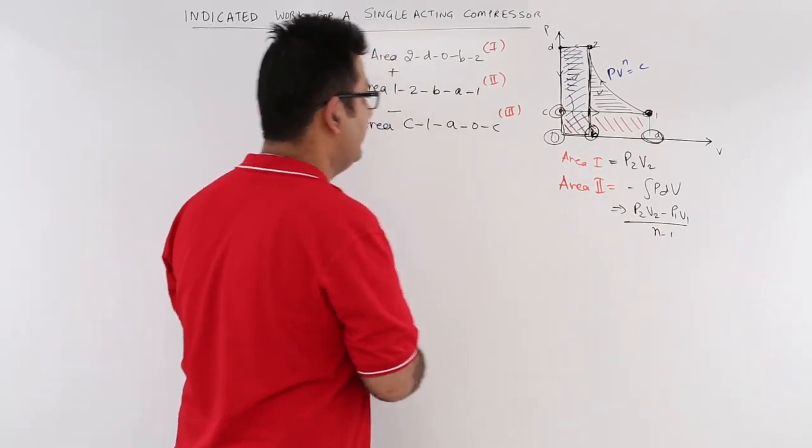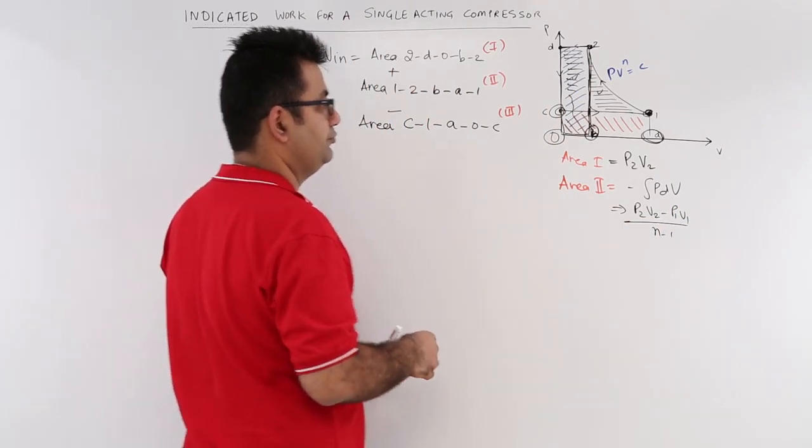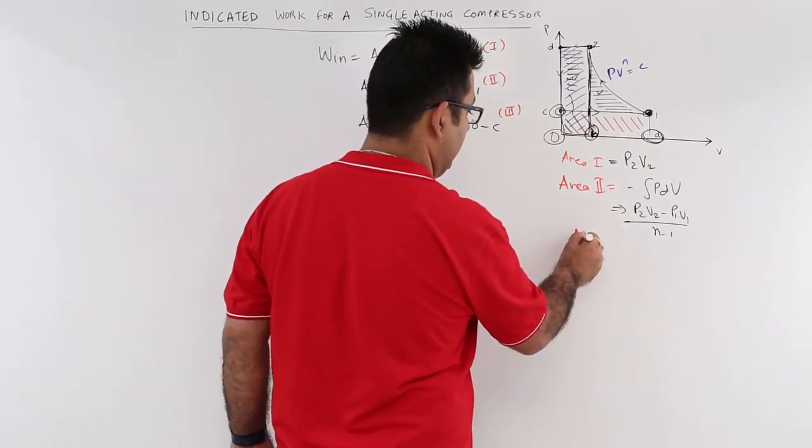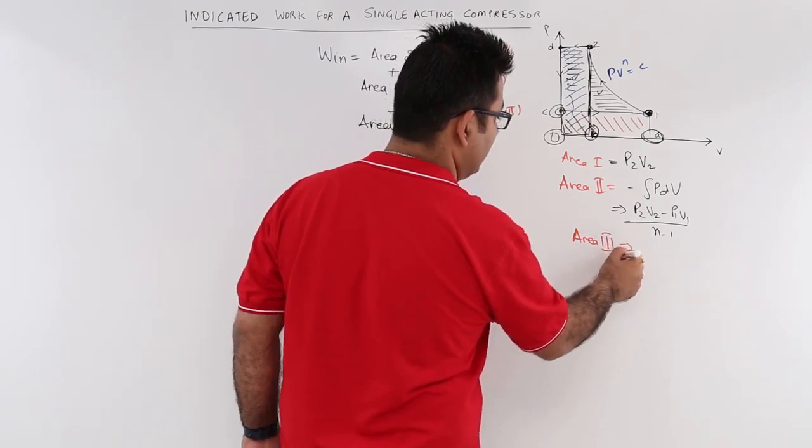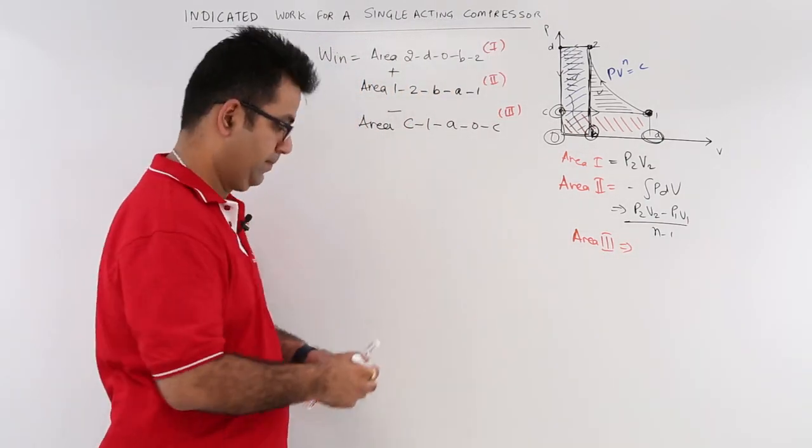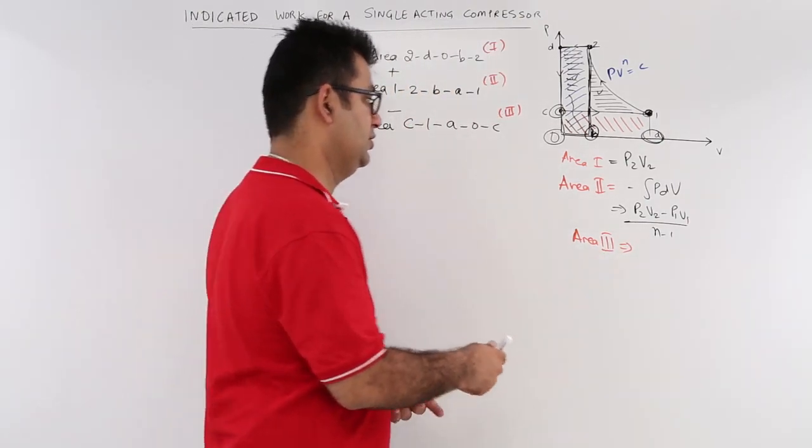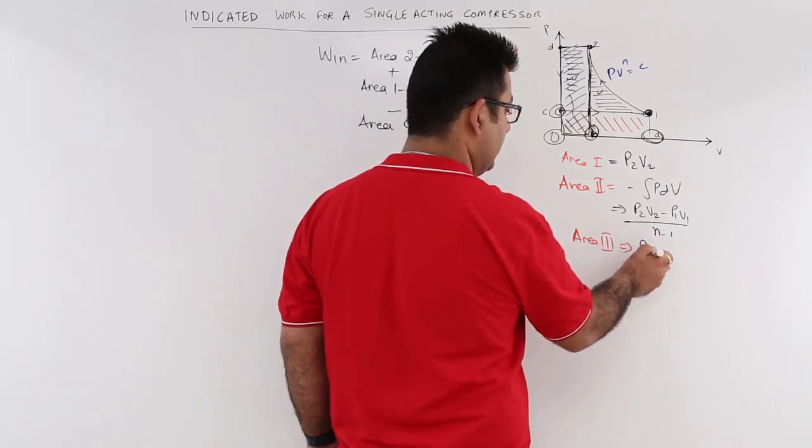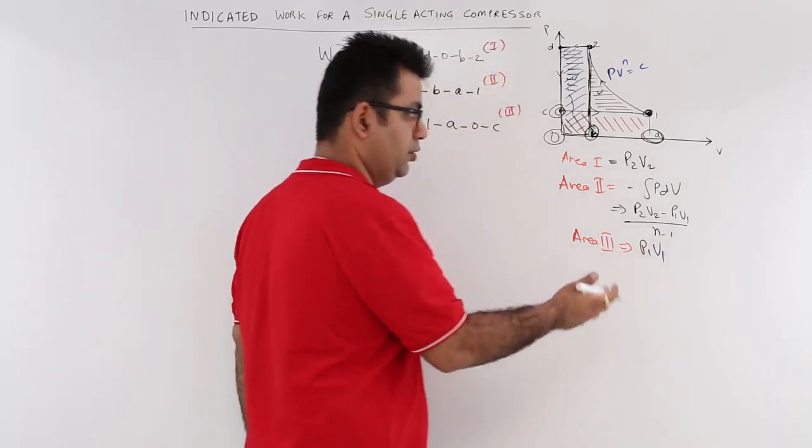Now let us come to area 3. We need to subtract area 3. So this is being subtracted because this is the pumping work, suction work. So this is again flow work P1V1. This is during the suction stroke.